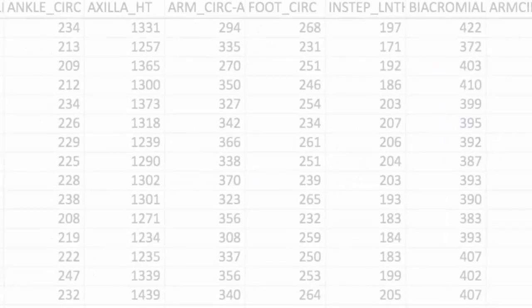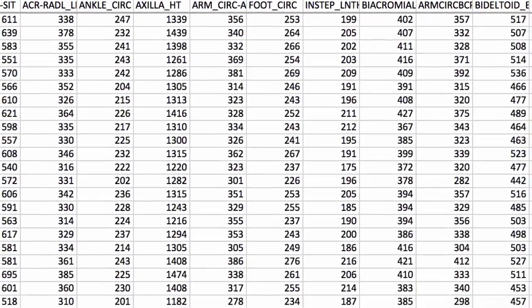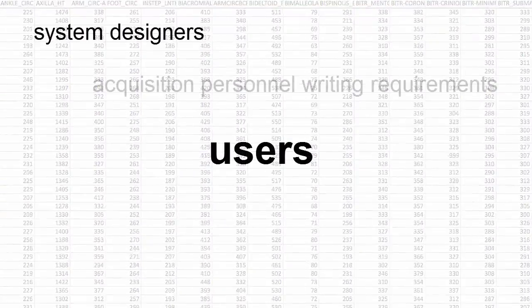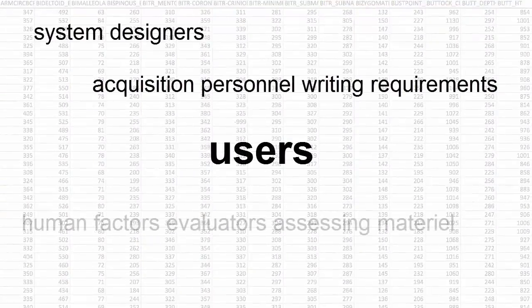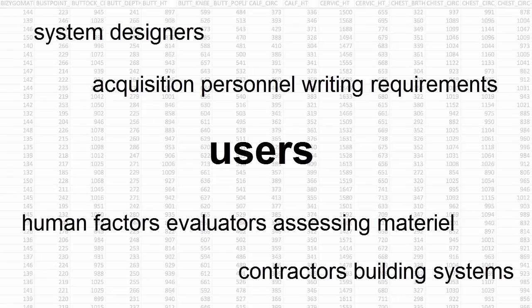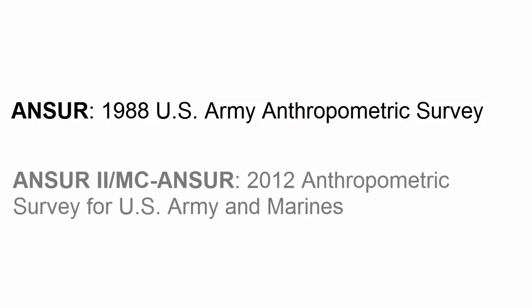Detailed databases of reference anthropometry for the military have been compiled in recent years and made available to users, a group including contractors that build military systems and evaluators that ensure their performance. Examples of anthropometric databases include ANSWER, the 1988 U.S. Army Anthropometric Survey, and the new ANSWER II MCANSWER, for both the Army and Marines.